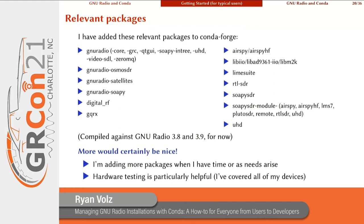These GNU Radio packages are compiled against both GNU Radio 3.8 and 3.9, so you can choose which version you want. This list is nice, but more packages would certainly be better. I'm adding more packages when I have time or a particular need arises, but I'm always interested in help. Hardware testing would be particularly helpful — I've covered all the devices I have or have access to, so if there's a device you're interested in that's not on this list, please help me test it and we can get a package for it.